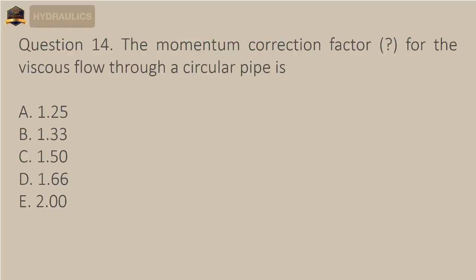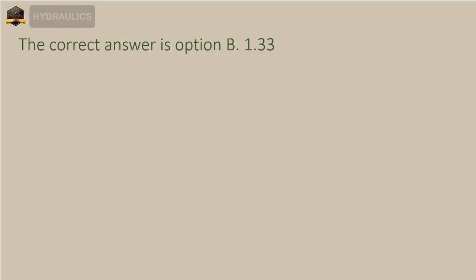Question 14: The momentum correction factor for the viscous flow through a circular pipe is — A) 1.25, B) 1.33, C) 1.50, D) 1.66, E) 2.00. The correct answer is option B: 1.33.